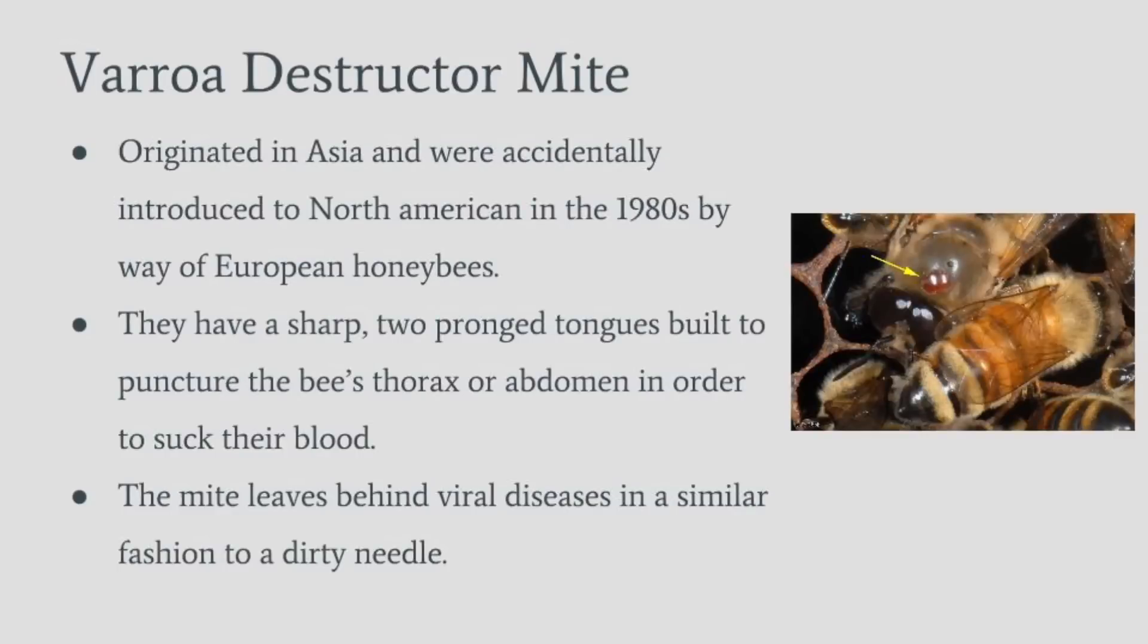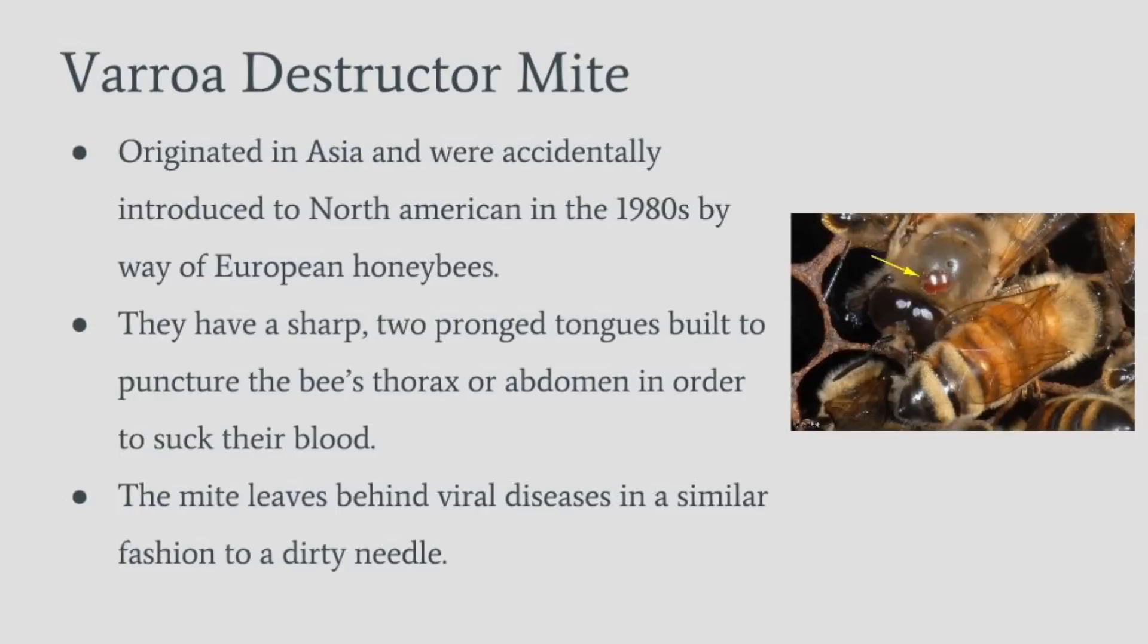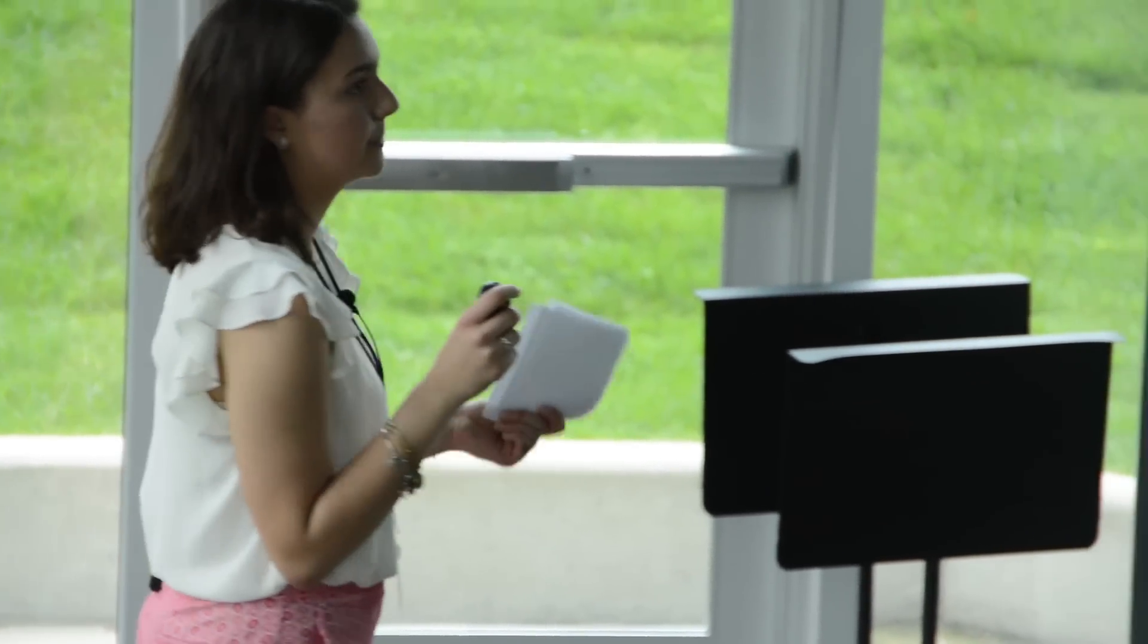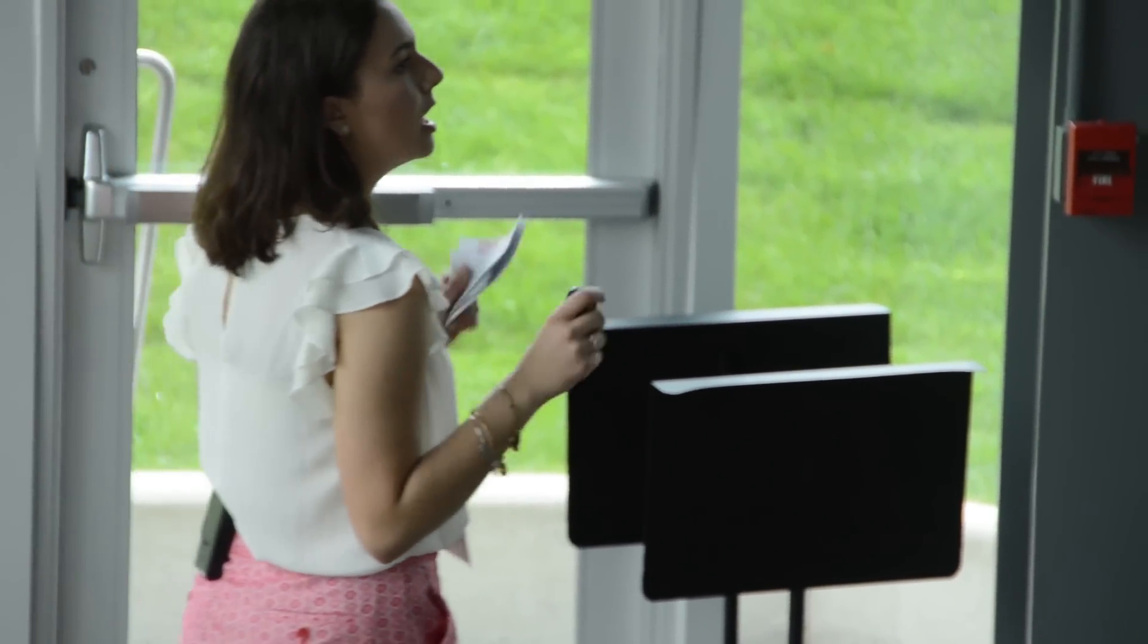Now the Varroa destructor mite is something that I said is very specific to this issue. The Varroa destructor mite is actually a mite that preys on the bees and will enter into the hives. The Varroa destructor mites have these piercing tongues that they can use to enter into the bees' bodies and will actually suck out their blood. And although that sounds kind of gruesome, it's not the main point that I'm trying to make here.